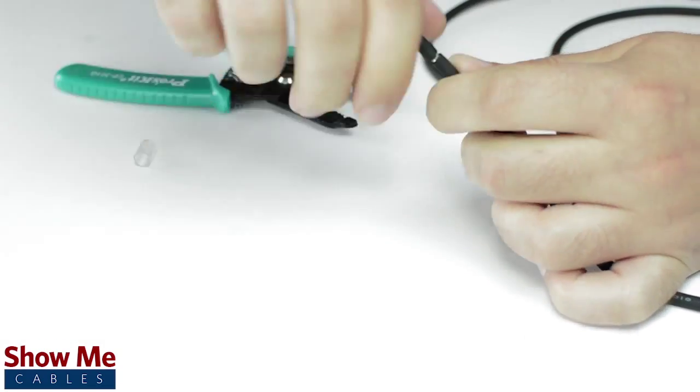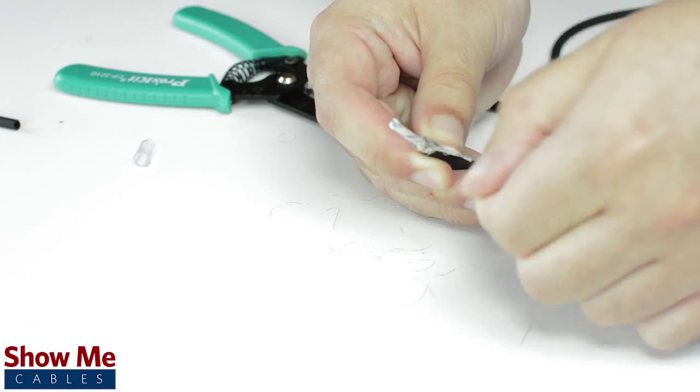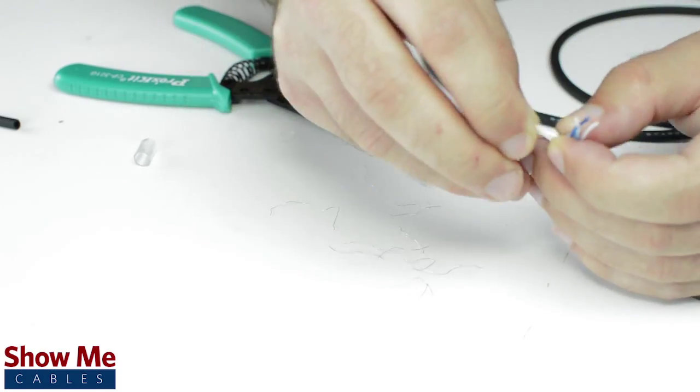Using a cable stripper, strip back the cable jacket. Then twist the shield together. Cut off any additional filler material.